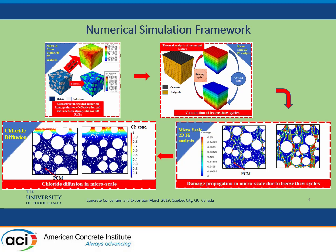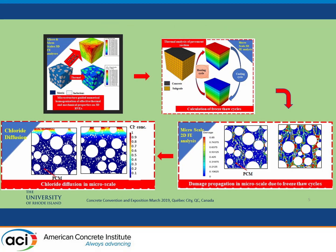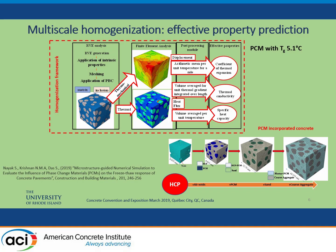Once we have the microstructure damages, we put them into a multiphysics framework to find the chloride diffusion in such damaged microstructures. The first module is the numerical homogenization module — a multiscale homogenization procedure repeated at every scale. The first scale is cement paste plus air voids; the next scale adds PCMs. The cement paste and air voids become the matrix at the second scale, and we homogenize again with PCM inclusions, continuing until we arrive at PCM-incorporated concrete.